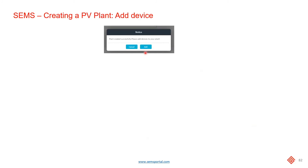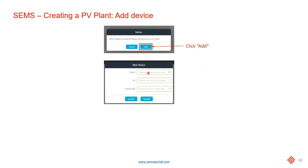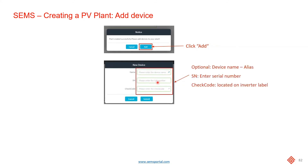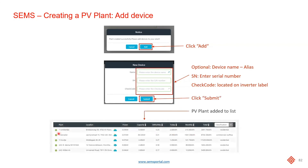Once you've completed that part of the process, the next step is to add the actual inverter. Click on the add button and enter a name for the inverter if you like. What's important is the serial number and the check code. The check code is the six-digit number located on the nameplate on the right-hand side of the inverter. Every serial number has a unique check code, so make sure you've entered the correct check code and then click submit. It will then add it to the list of PV plants under your control.